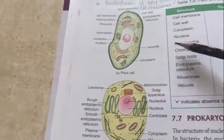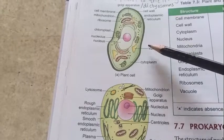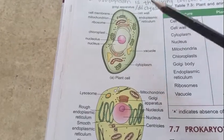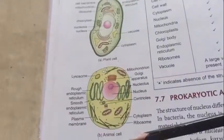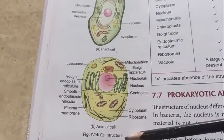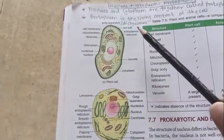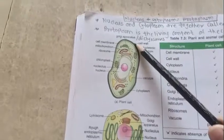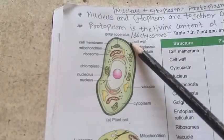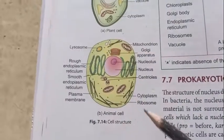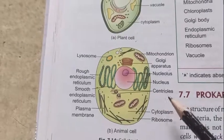The next parameter is the cell wall. The cell wall is present only in the plant cell and it is absent in the animal cell. You can see here in the image — this is the cell wall, which is present only in the plant cell. If you look at the structure of the animal cell, you will not find the cell wall.